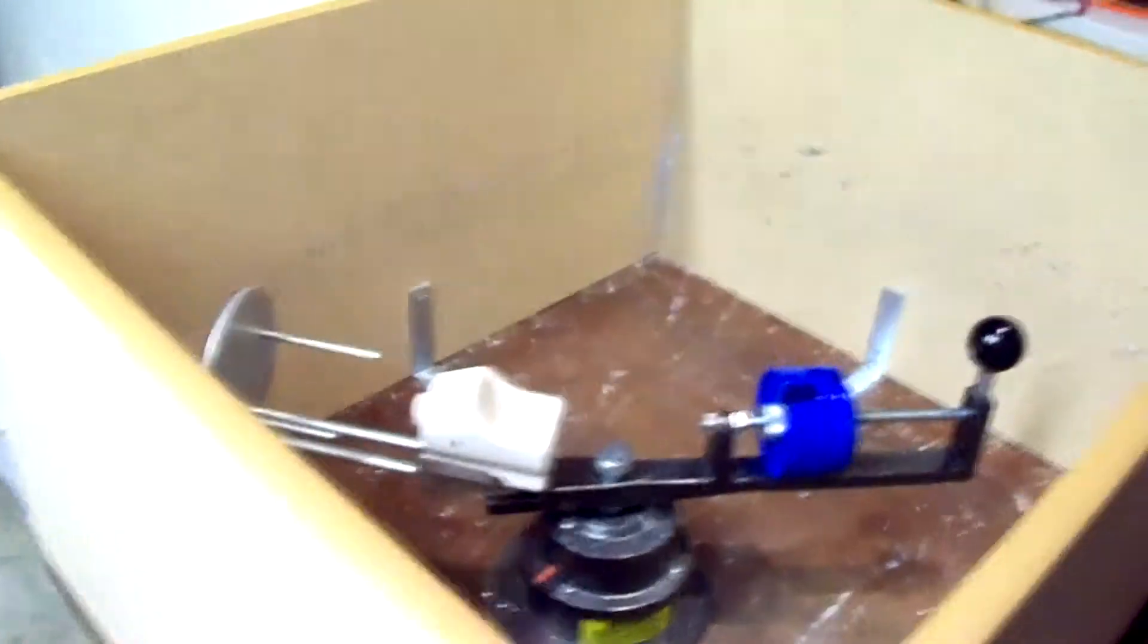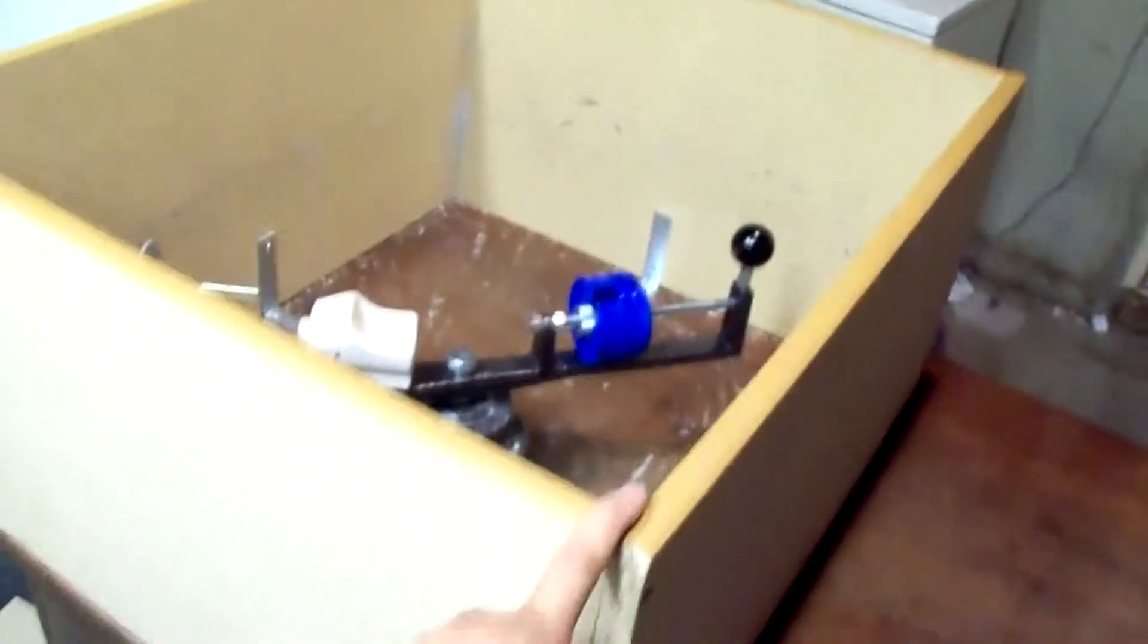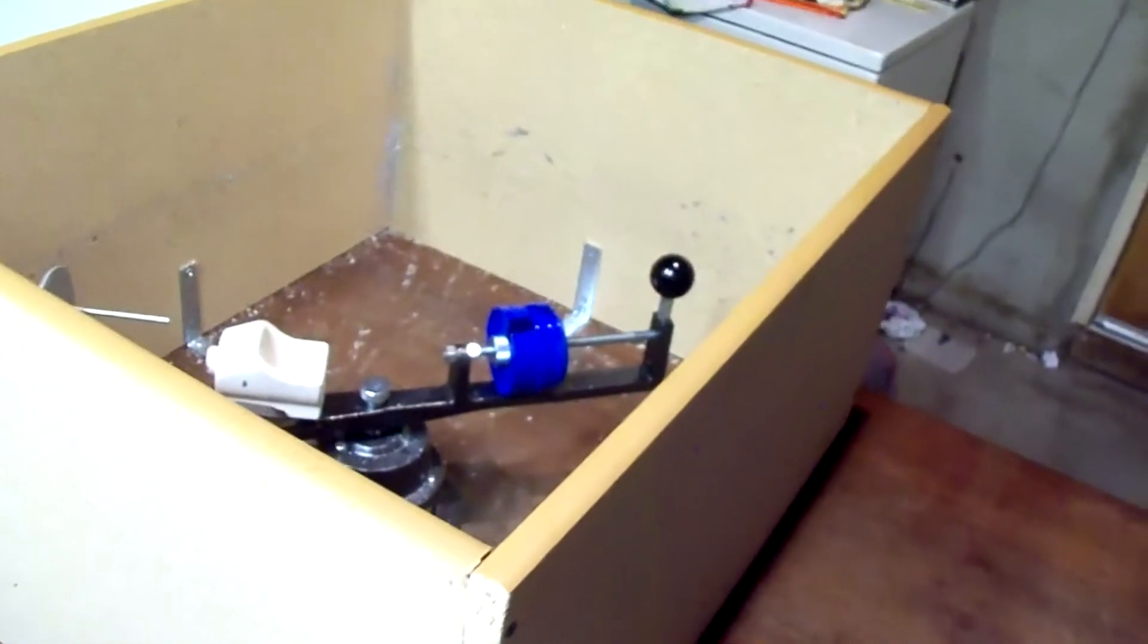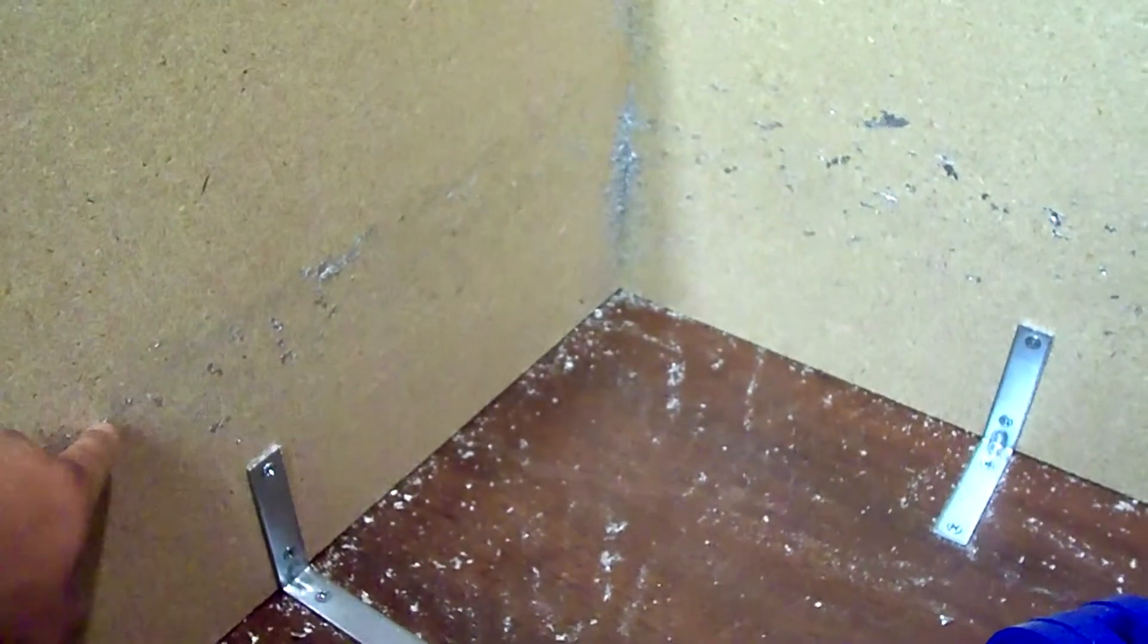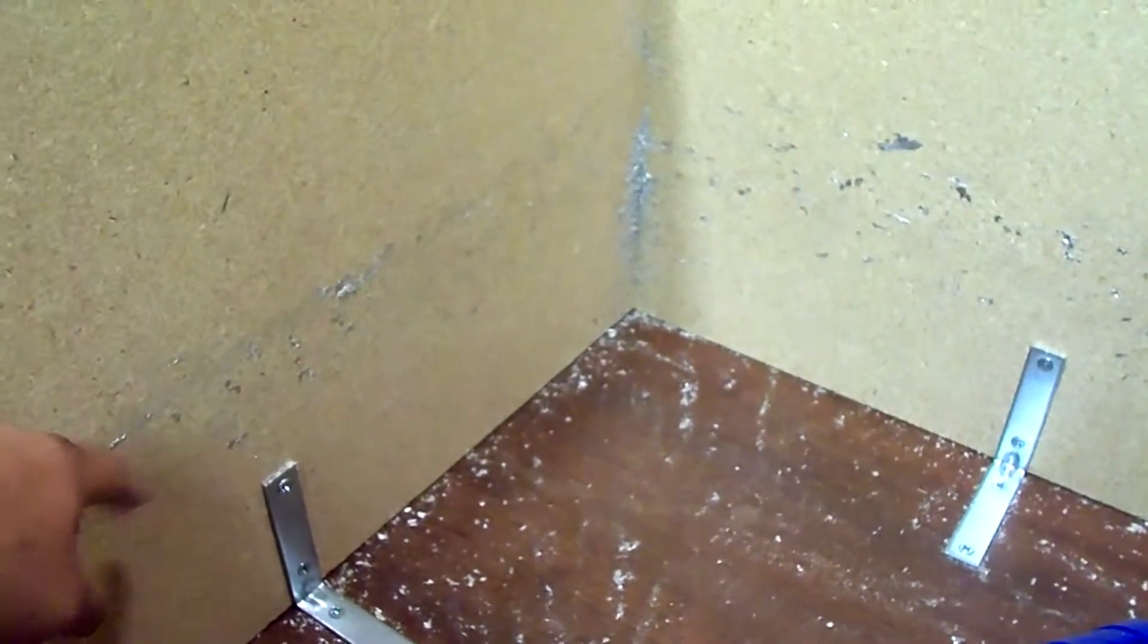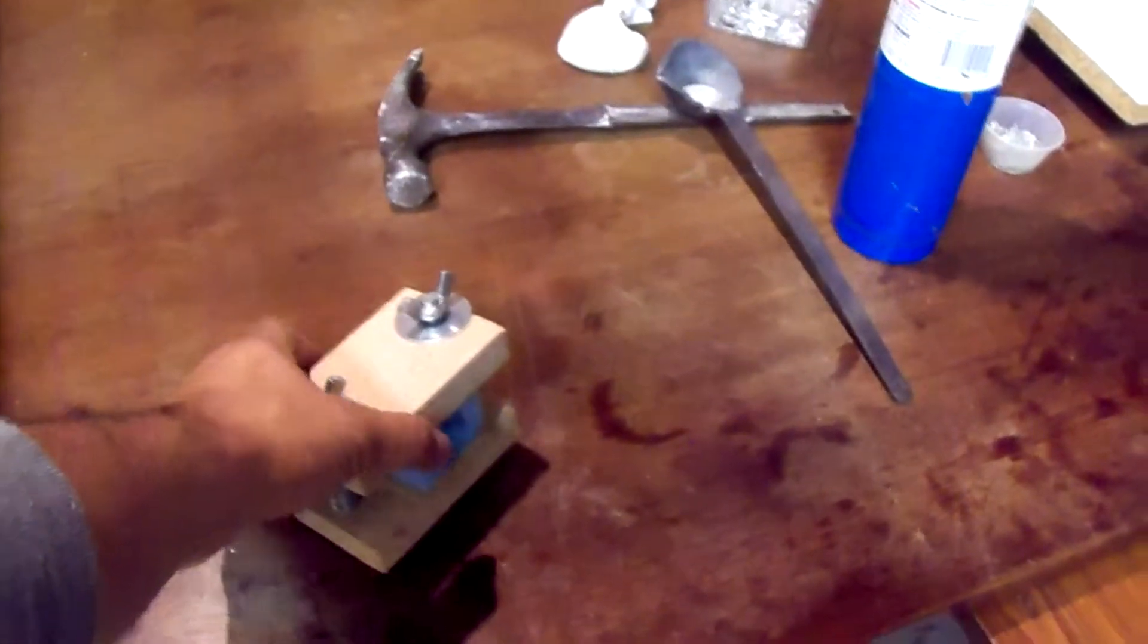I put the splash guard here, which is just some boards, because as you can see sometimes it will splash out the molten metal, so it'll catch it there.